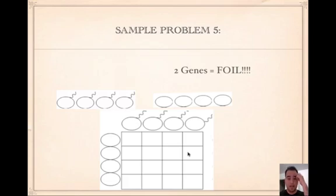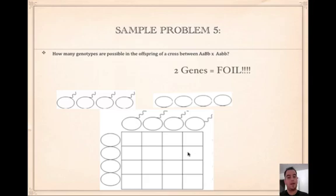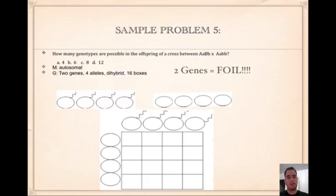This next part is for advanced students. For a dihybrid cross: how many genotypes are possible in the offspring of a cross between AaBb × AaBb? We know it's autosomal because they don't say it's sex-linked — anytime they don't tell you, assume autosomal. There are two genes because two letters are used: A and B. So that's two genes, four alleles, dihybrid, and 16 boxes.